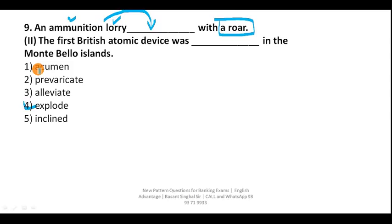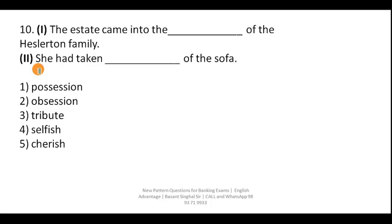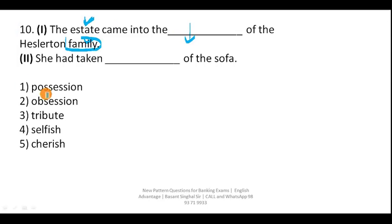Question ten: 'The state came into the ___ of the Hamilton family.' The keywords are 'state' and 'family' — we are establishing the relationship between them. A family can take possession of a state, and possession is always followed by the preposition 'of.' So your correct answer is possession. For example: 'She had taken possession of the sofa' — this is quite suitable.